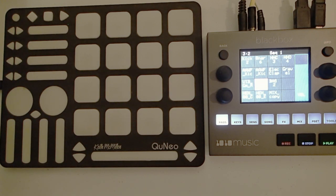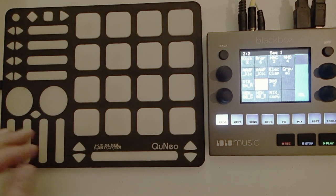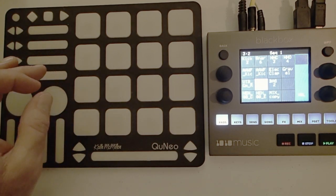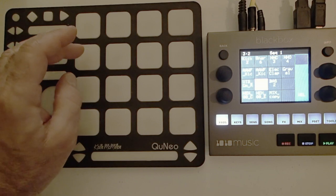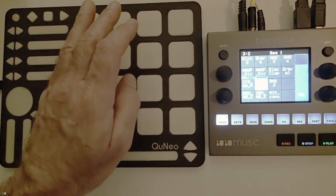I really like the Keith McMillan Cuneo, and here are some examples of things you can do with it. You can set up a bank on the Cuneo to fire off pads just like you would any pad controller. One shots.